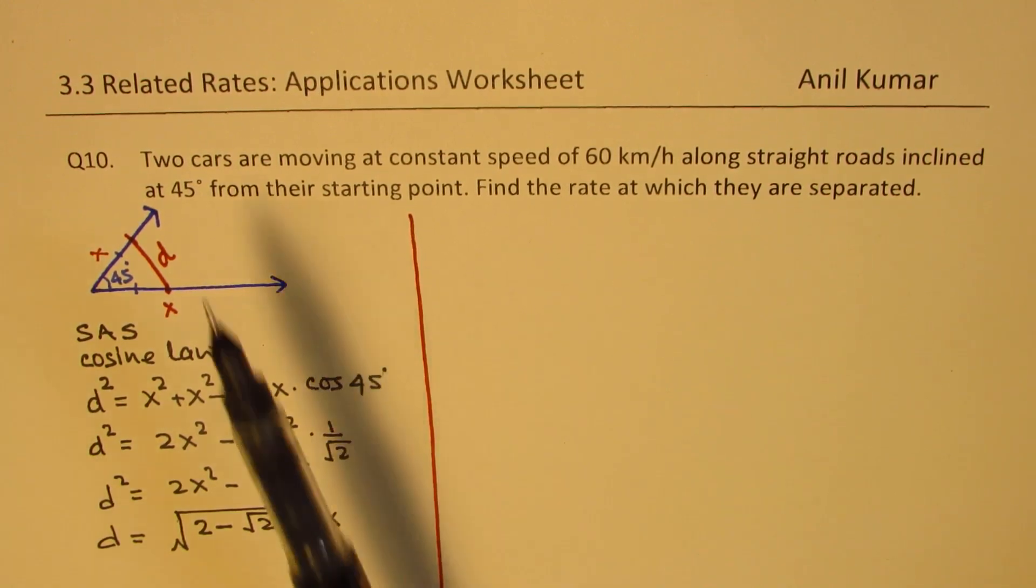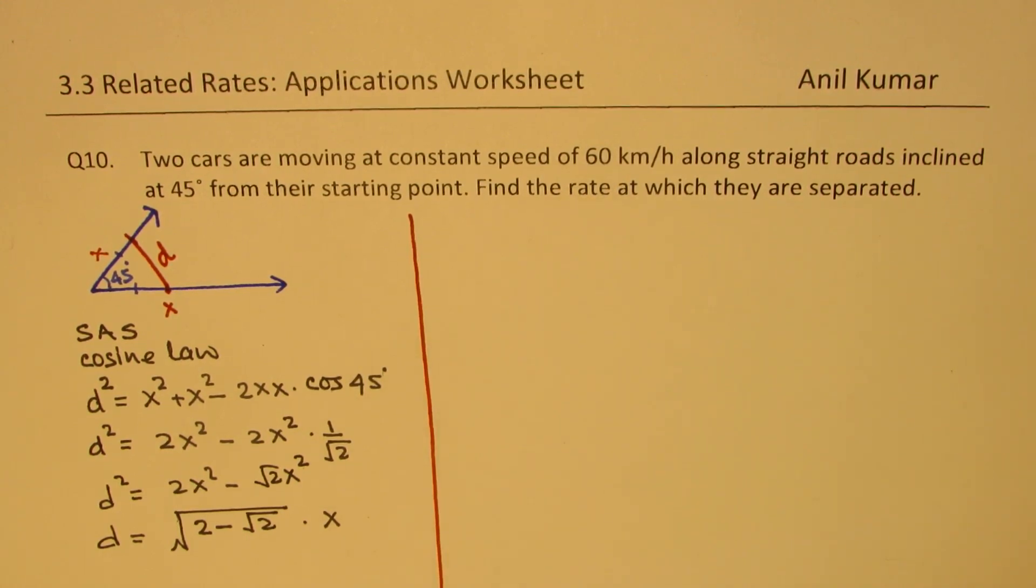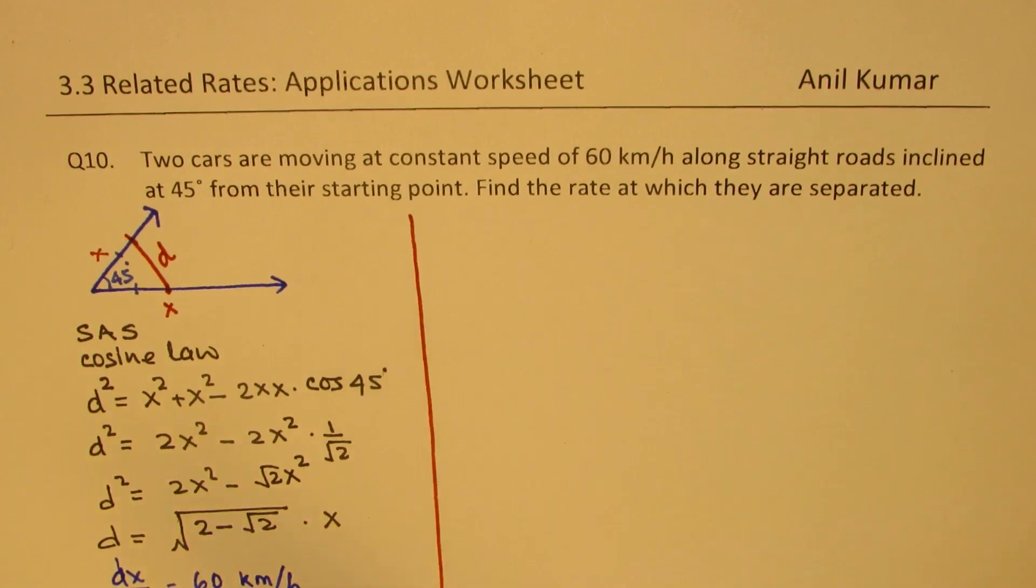Now we are saying two cars are moving at a constant speed of 60 kilometers per hour. So that really means that change in distance dx dt is 60 kilometers per hour. So we know the change in distance and we need to find the rate at which they are being separated. So we really find d distance d which we took here over dt. This is what we need to find, a general expression. So that is the question for us.